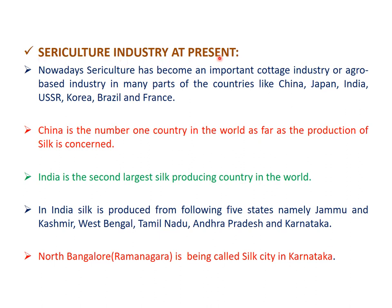Nowadays sericulture has become an important cottage industry or agro-based industry in many parts of the world like China, Japan, India, USSR, Korea, Brazil, and France. China is the number one country in the world in silk production, producing nearly 150,000 metric tons of raw silk. India is the second largest silk producing country, producing nearly 26,000 metric tons of mulberry silk and nearly 9,000 to 10,000 metric tons of non-mulberry silk.